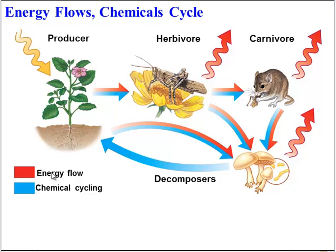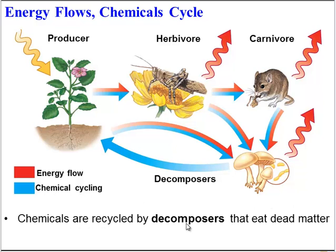Why are there more producers than carnivores in an ecosystem? It has to do with the fact that we can't create or destroy energy, and we can't create or destroy matter. In an ecosystem, chemicals are being recycled — a plant is made of chemicals, those chemicals get transferred to the grasshopper when it eats the plant, and then to the mouse. When the mouse dies, decomposers break it down and return those chemicals to the soil, which can become part of a plant again. Energy, however, does not get recycled. Energy flows.